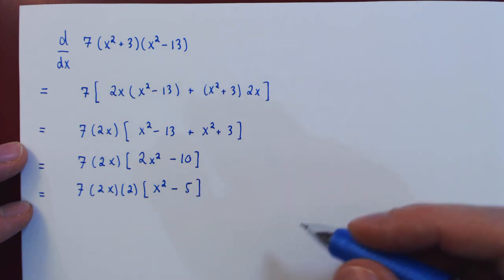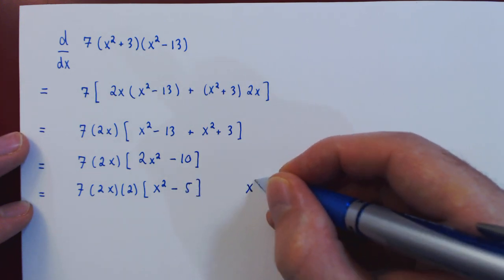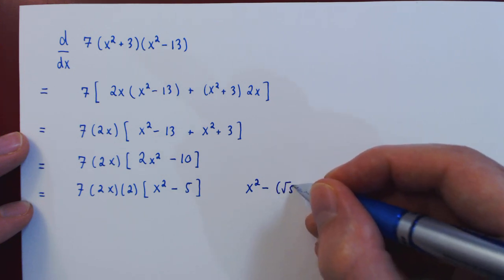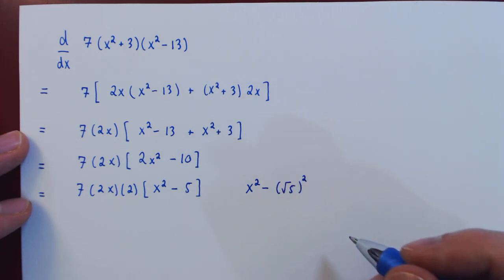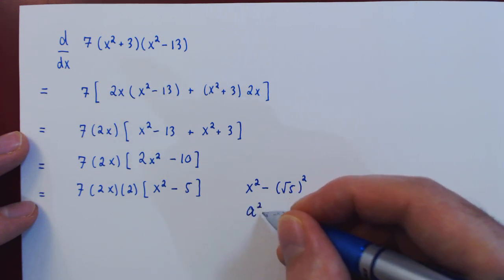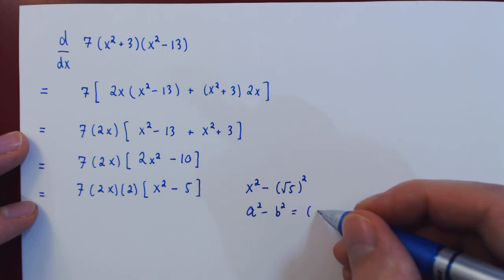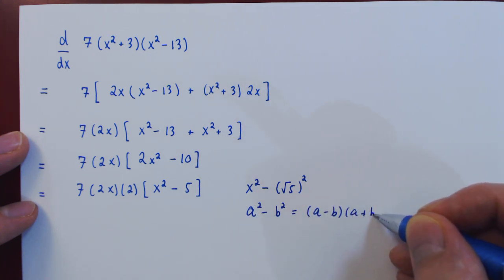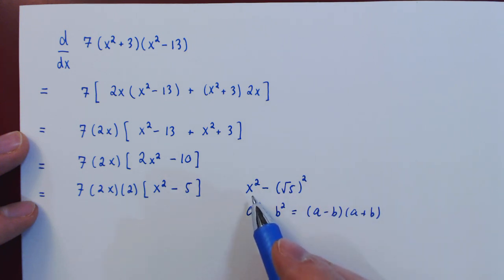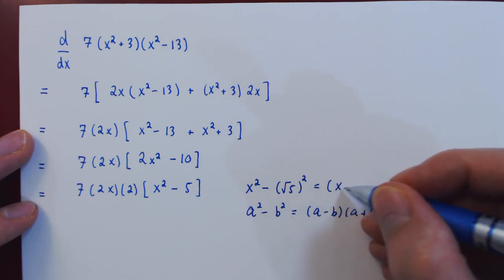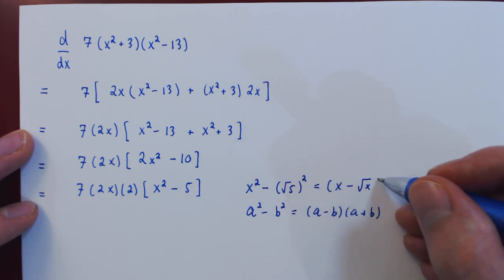You can think of 5 as the square root of 5 squared, and if you recall the general principle, a squared minus b squared for any a and b factors as a minus b times a plus b. So if we view x being a, root 5 being b, this factors as x minus root of 5 times x plus root of 5.